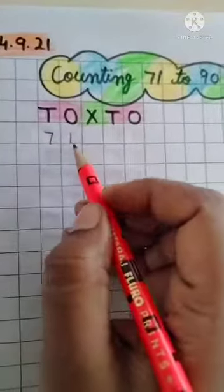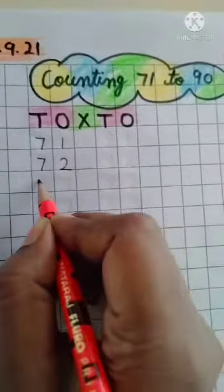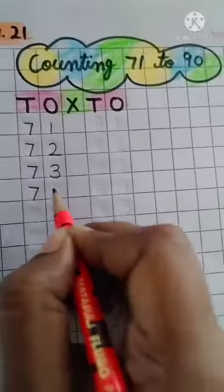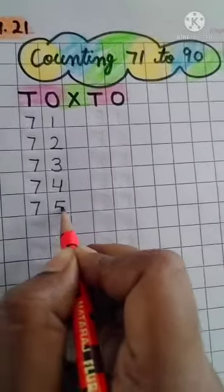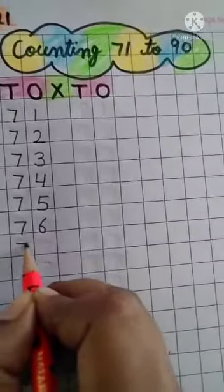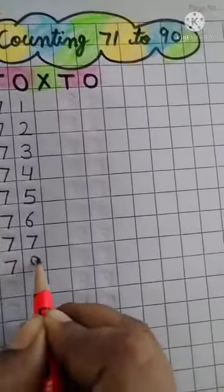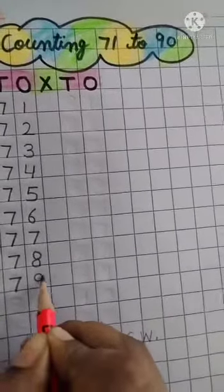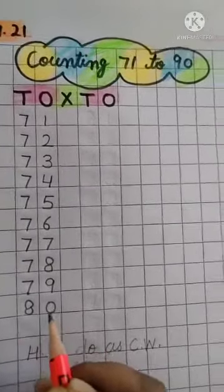71, 72, 73, 74, 75, 76, 77, 78, 79, 80. Now in the next line,